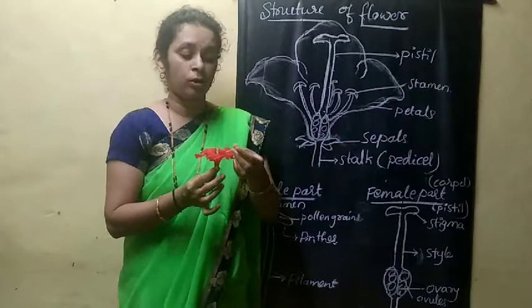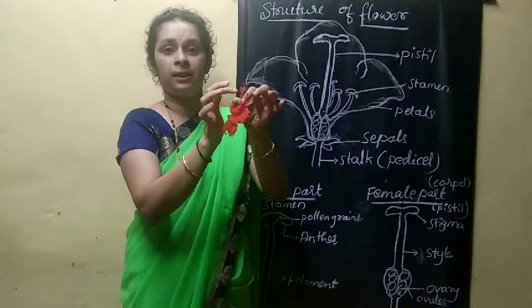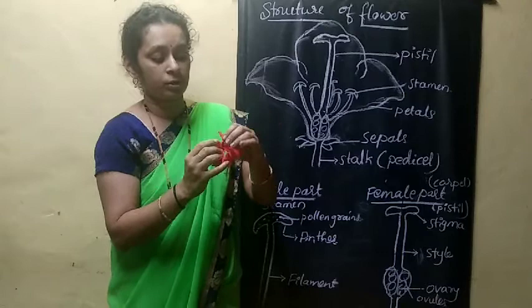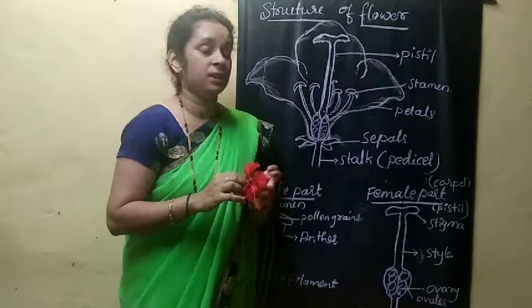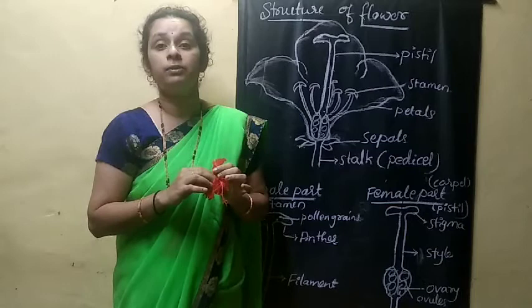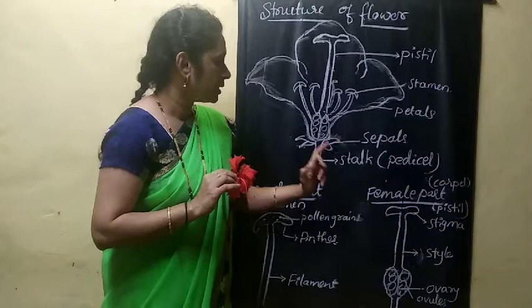Inside the flower you will come across a male part — that is called a stamen. And there is a female part inside — that is called a pistil. The female part of the flower is called a pistil, and the male part of the flower is called a stamen. Petals, sepals, and stalk — these are the main parts of the flower.